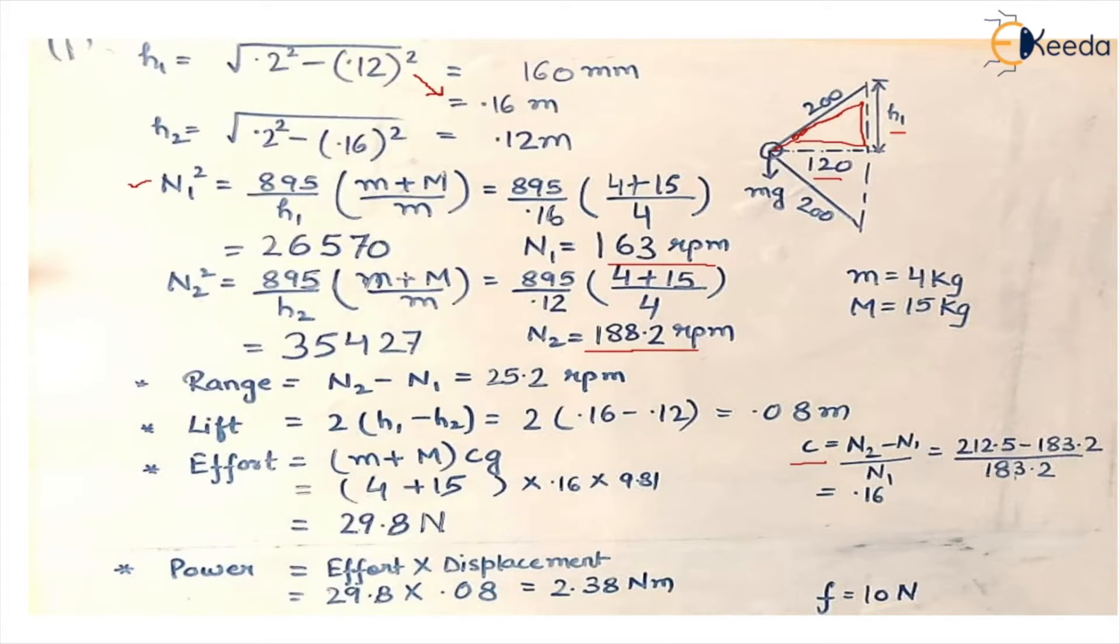Basically it is change upon the original speed. So we get the value of c as 0.16. We put the values in formula and we'll get the answer.